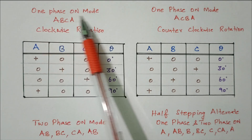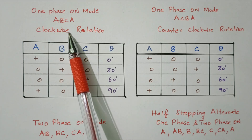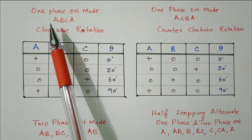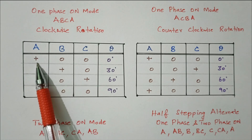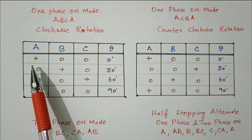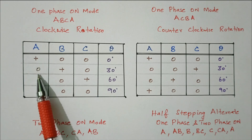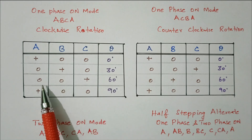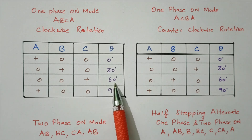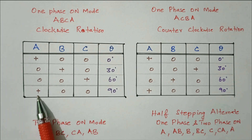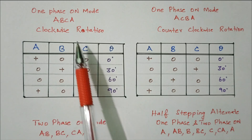Now we will see the various modes of operation. The first mode is the one-phase-on mode — only one phase is energized at a time, which is what we discussed in the principle of operation. The excitation order is a, b, c, a so that it rotates clockwise with a step angle of 30 degrees. A plus indicates excitation; zero indicates no excitation. Initially phase a is excited — that is the initial position, 0 degrees, step 1. Then a is de-excited and b is excited, rotating 30 degrees; then c is excited for another 30 degrees (total 60°); then a again for 90 degrees total.